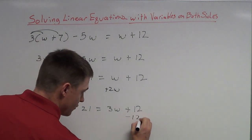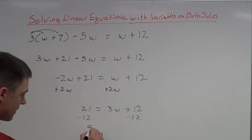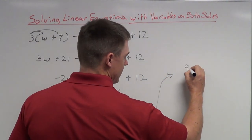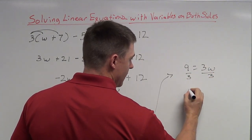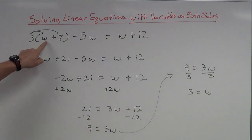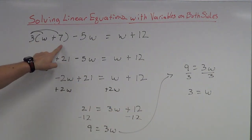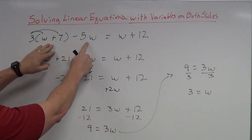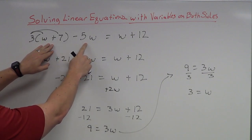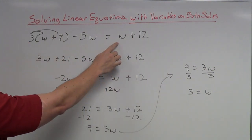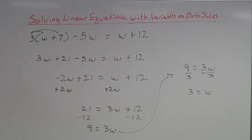Now I get the numbers over by subtracting 12 from each side: 9 equals 3W. Dividing by 3 on both sides gives W equals 3. Checking: plug W=3 back into the original — 3 plus 7 is 10, times 3 is 30, minus 5 times 3 which is 15, so 30 minus 15 is 15 on the left. On the right, 3 plus 12 is 15. So 15 on the left and 15 on the right — it works.